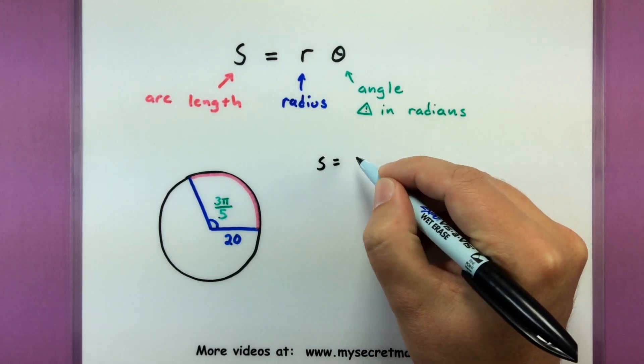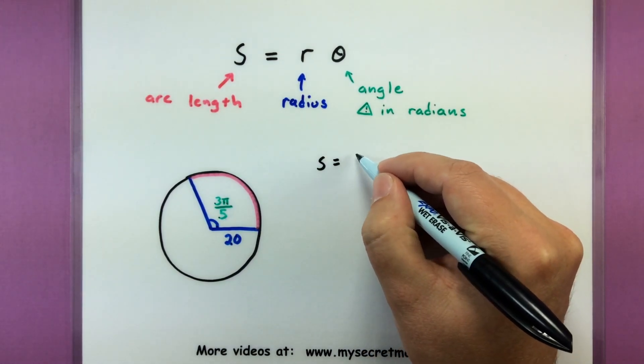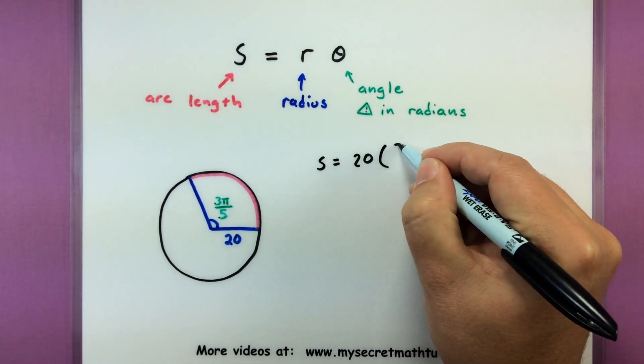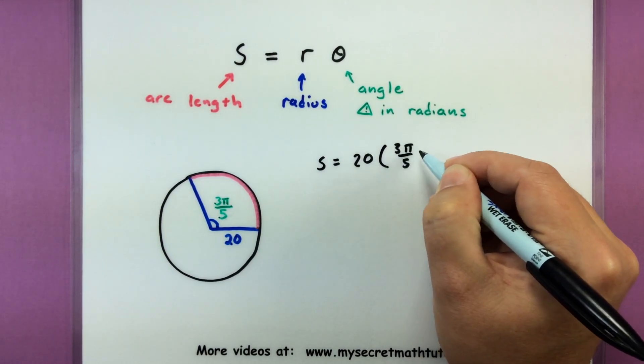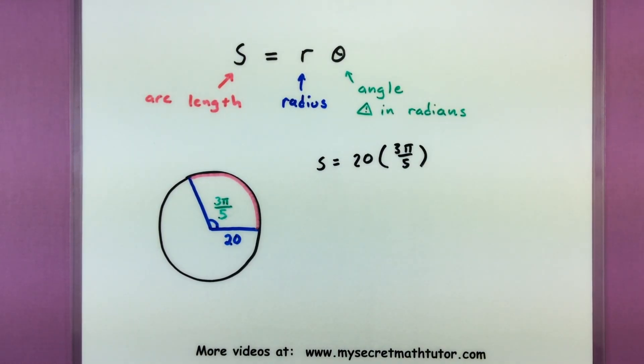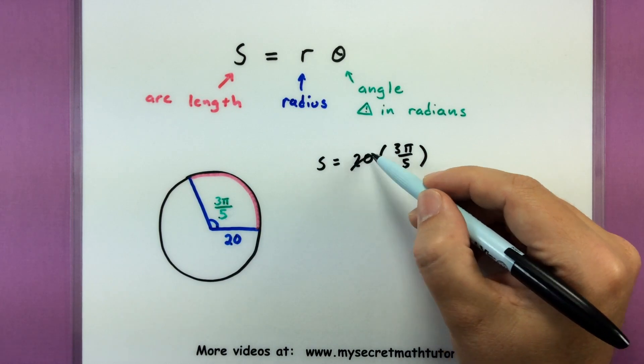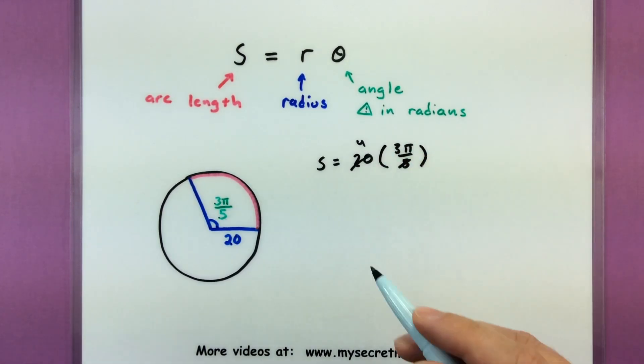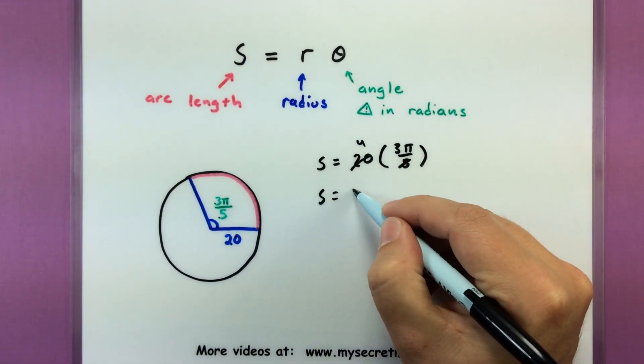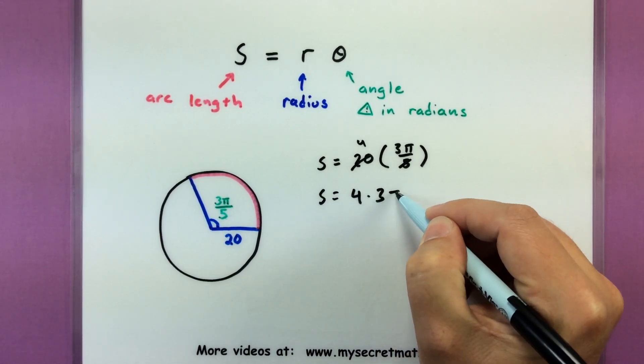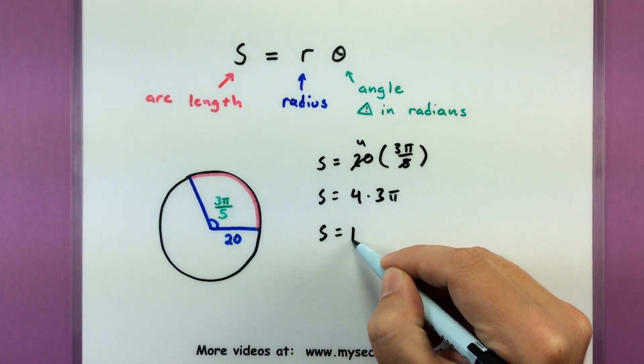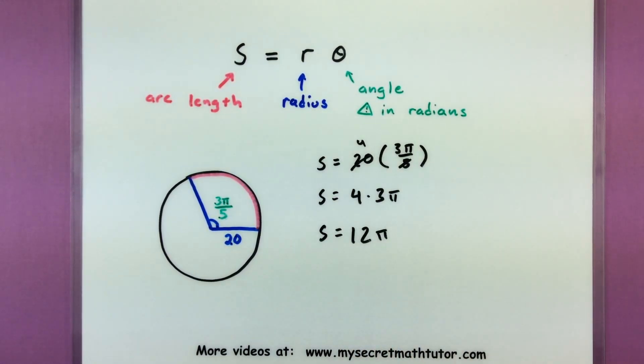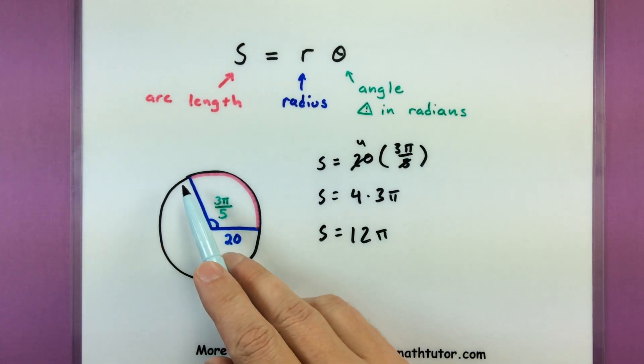I'll say my arc length equals the radius, 20, multiplied by 3π/5. This isn't too bad. All I have to do is reduce it. 5 goes into 20 four times, so my arc length equals 4 times 3π, or 12π. That's the length of this portion.